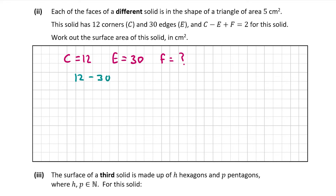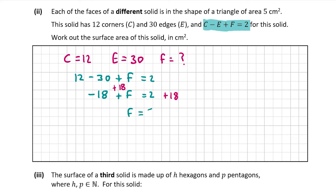So it's C minus E plus F equals 2, which is 12 minus 30 plus F equals 2. That gives us minus 18 plus F equals 2. Moving minus 18 to the other side by adding 18 to both sides: minus 18 plus 18 leaves 0, so F equals 2 plus 18, which is 20. There are 20 faces. With 20 faces each of area 5 centimetres squared, we multiply 20 by 5 to get the total surface area, which is 100 centimetres squared.